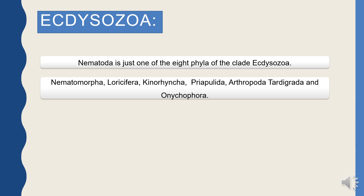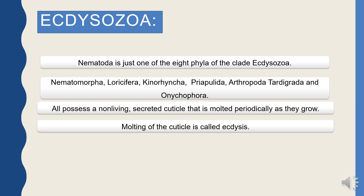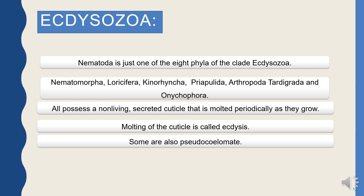The shedding of the cuticle is called molting, and this molting of the cuticle is called ecdysis. There are two categories of animals found in Ecdysozoa: coelomates — Arthropoda, Tardigrada, and Onychophora — and pseudocoelomates — Nematoda, Nematomorpha, Loricifera, Kinorhyncha, and Priapulida.